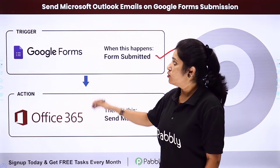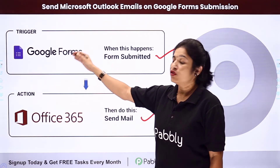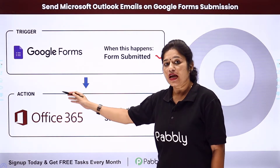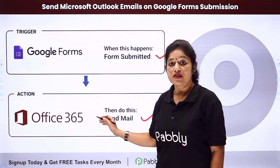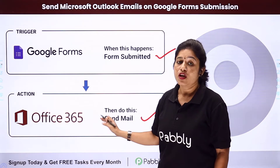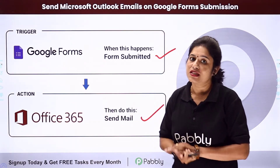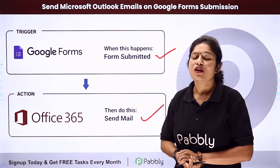In this particular use case, your trigger application would be Google Forms and your action application will be Microsoft Office 365. Now let's look at how you can integrate and set up this automation.